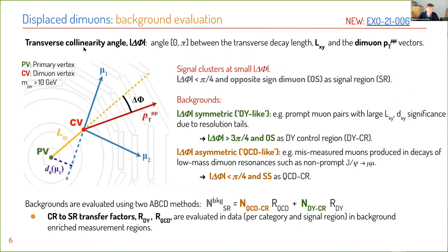A key feature is that we can associate STA muons to TMS muons — a powerful handle to suppress prompt Standard Model backgrounds in categories based on STA muons. One of the key features of the search is the collinearity angle delta phi, defined as the angle between the LXY and the dimuon pT vector. This angle is expected to be small for signal; we use a less-than-pi/4 signal region applied to opposite-sign dimuons.